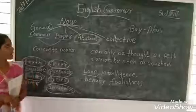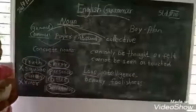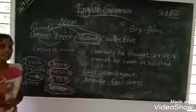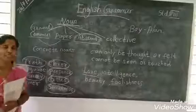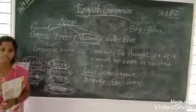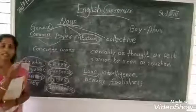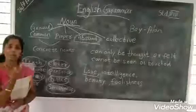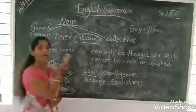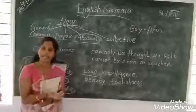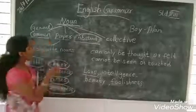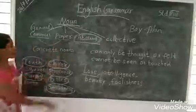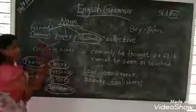So, what have we discussed in this class? What is the noun? Noun is the name of a person, place, or thing. There are four types of noun: common noun, proper noun, abstract noun, and collective noun. Common noun and proper noun are also known as concrete nouns.